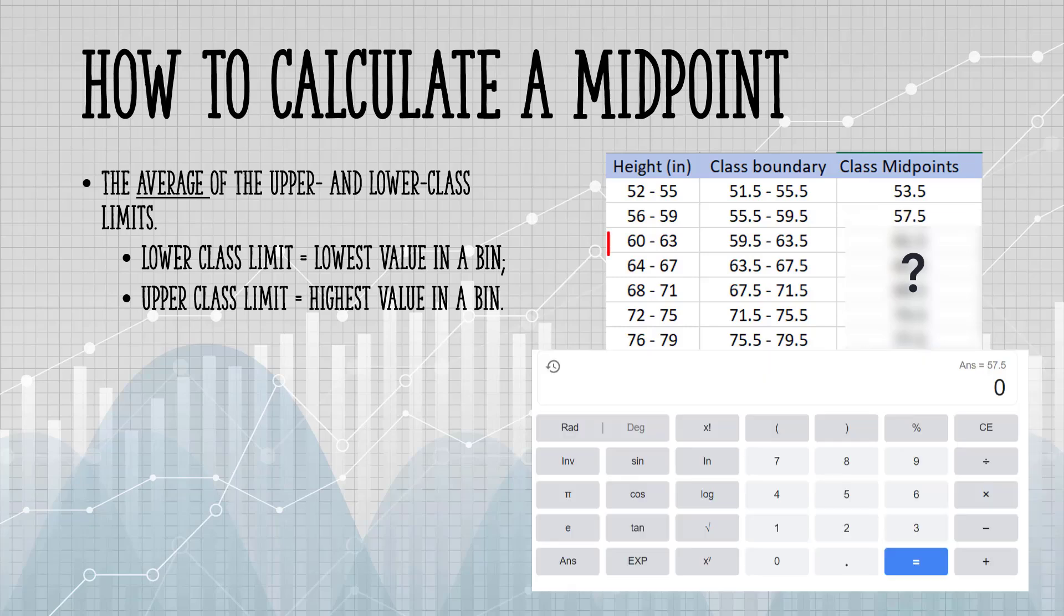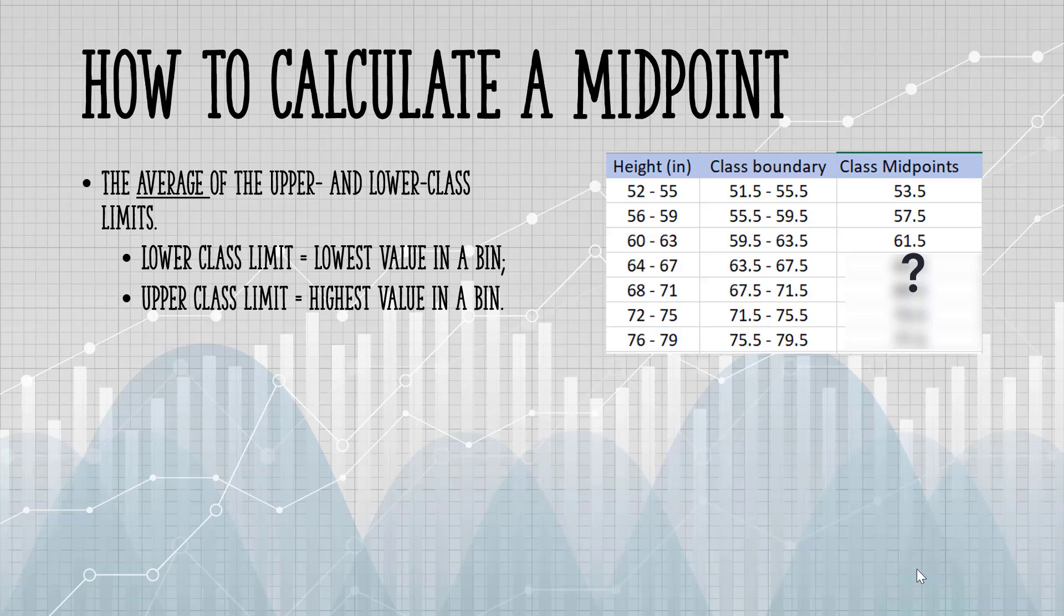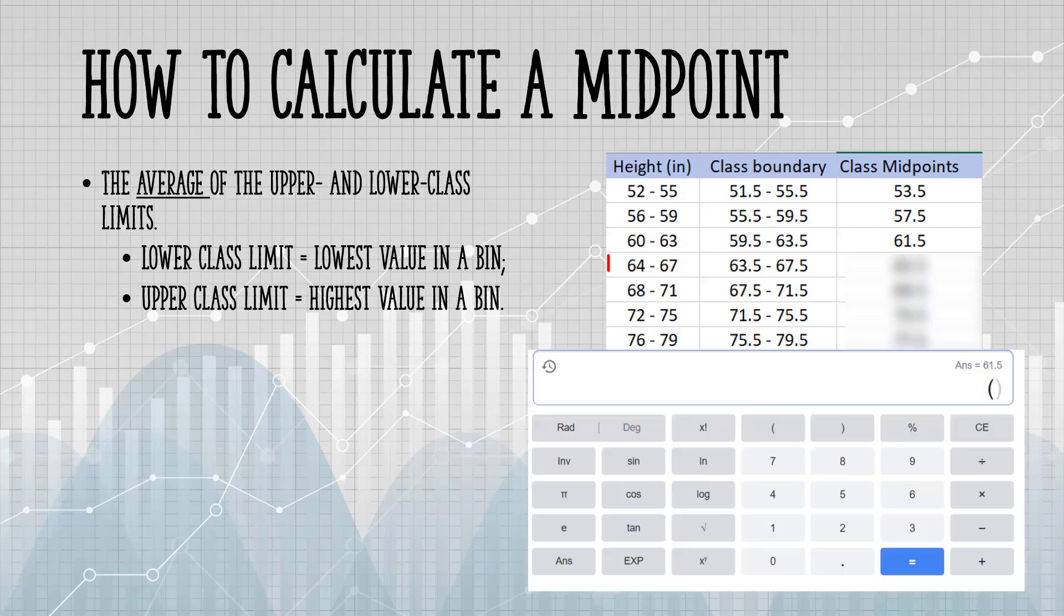Let's do one more. We have 60 and 63 divided by 2 is 61.5 and that's our third midpoint. I'm going to continue down the column, adding the two class limits and dividing by 2 to get each midpoint.